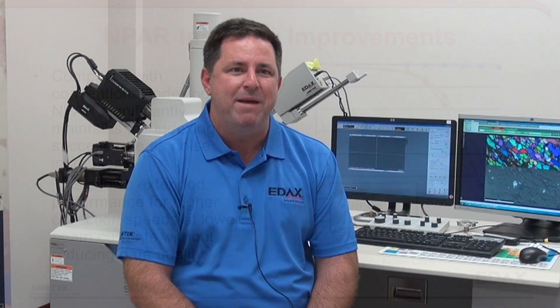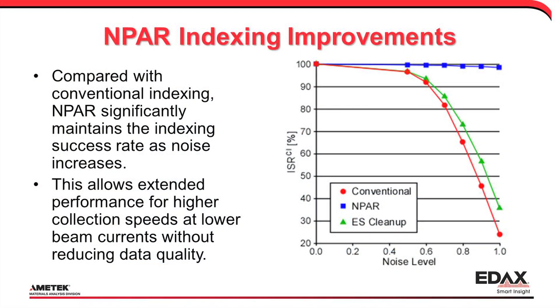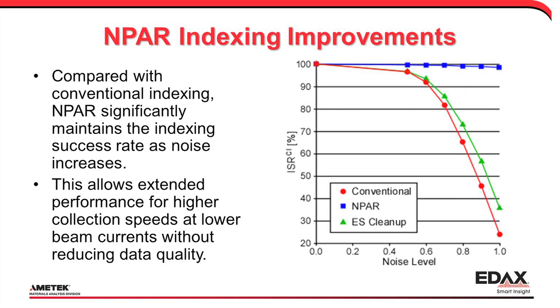In addition to improving indexing rates, N-PAR improves grain contrast and definition by enhancing the difference between grains and grain boundaries. N-PAR can also help smooth out the effects of topographical gradients on the EBSD phosphor screen, improving performance on FIBed or ion milled surfaces.